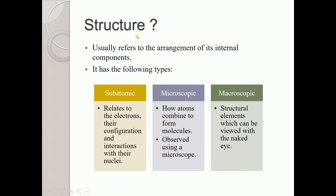If you talk about material structure, what does it mean? It usually refers to the arrangement of its internal components — how things are present internally. In a broader sense, we have macroscopic structure, where the structural elements can be viewed with the naked eye.